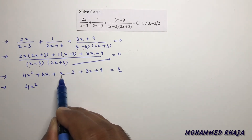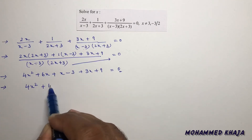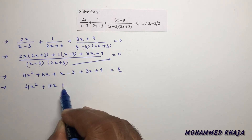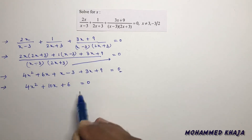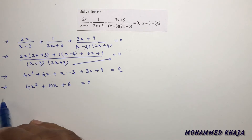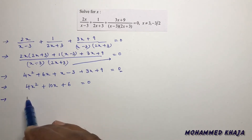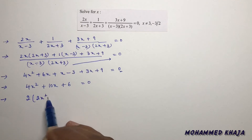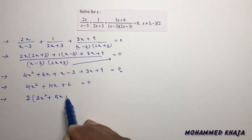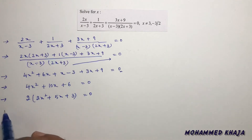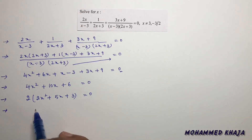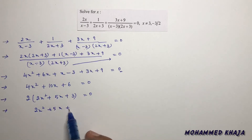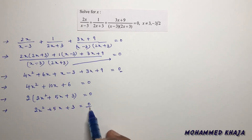Combining like terms: 4x², then 6x + x = 7x, plus 3x gives 10x, and -3 + 9 = 6. So we have 4x² + 10x + 6 = 0. Taking 2 as common factor, this gives 2(2x² + 5x + 3) = 0, so 2x² + 5x + 3 = 0.